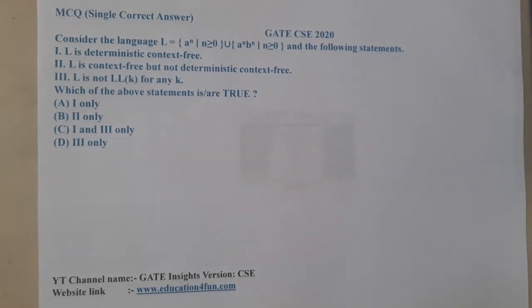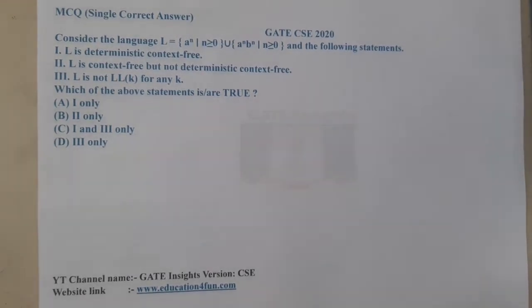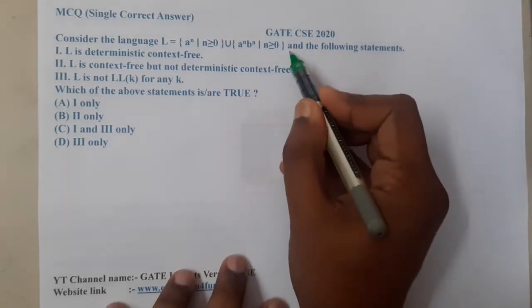Option 1 says that L is deterministic context-free. Option 2 says that L is context-free but not deterministic context-free. To be clear, statements 1 and 2 are opposite to each other, so any one of them will only be correct.